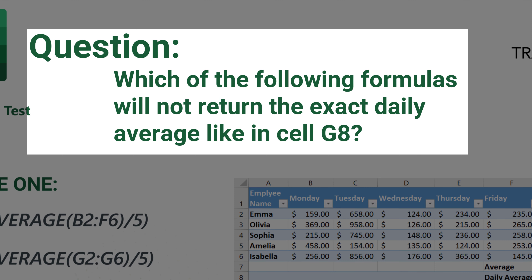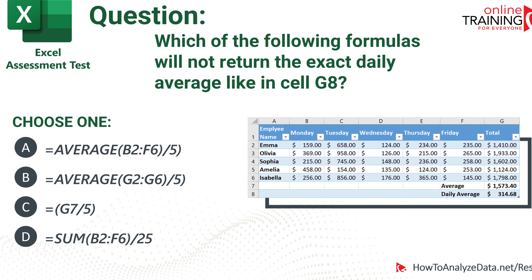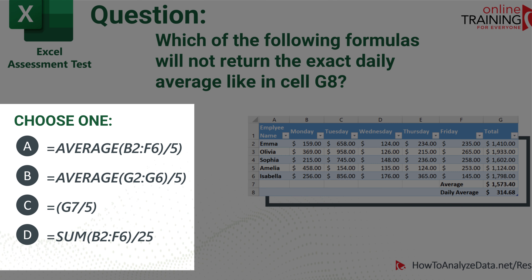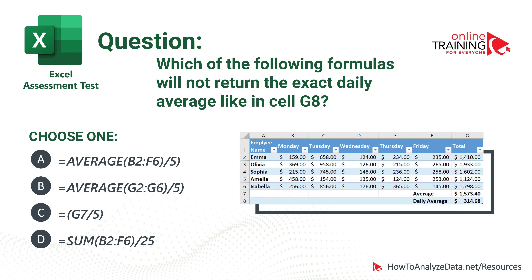Which of the following formulas will not return the exact daily average like in cell G8? There are four choices: Choice A is AVERAGE of a range divided by 5. Choice B is AVERAGE of another range divided by 5. Choice C is G7 divided by 5. And Choice D is the SUM of values divided by 25. Which one do you think is the right answer?